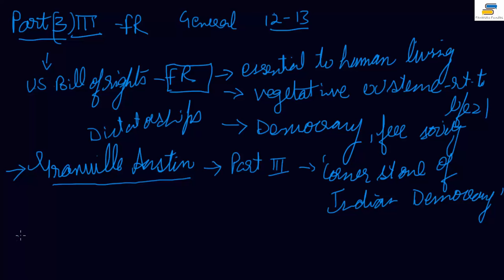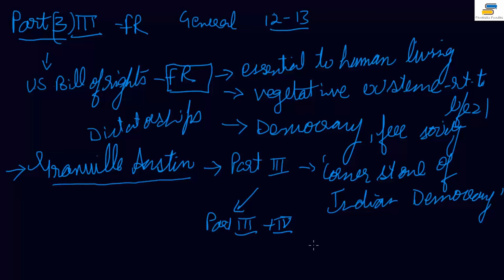Part III together with Part IV — which is about the Directive Principles of State Policy (DPSPs) — forms a very important combination. The DPSPs are guidelines under which the state has to work, with the ultimate aim of converting directive principles into fundamental rights. I'll talk more about the difference between Part III and Part IV in the next few lectures.